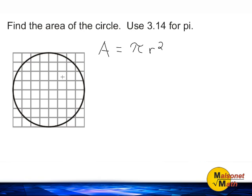Using the grid we are going to identify what the length of the circle's radius is. We can see that this circle has a radius of 4 units.